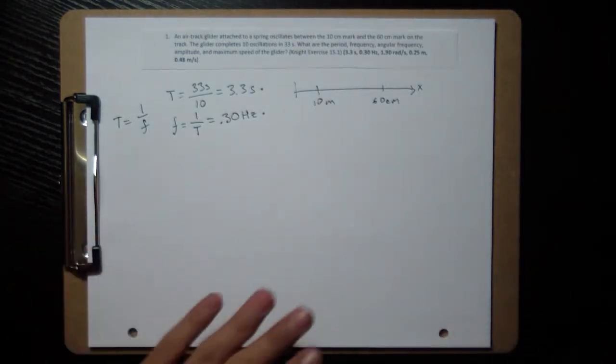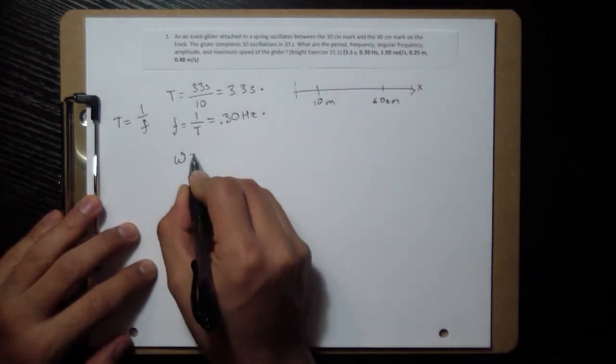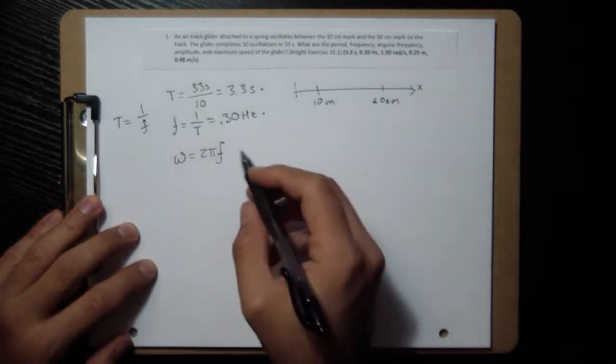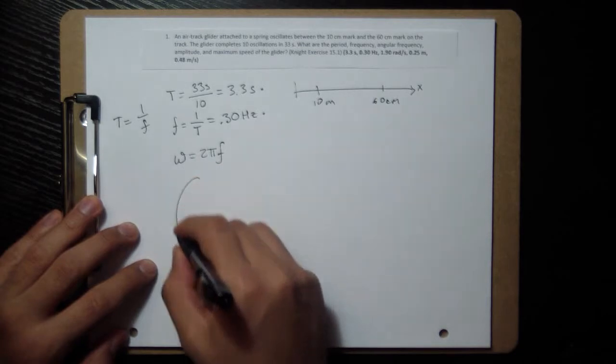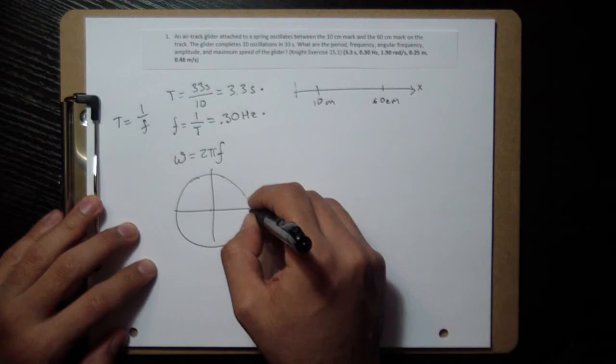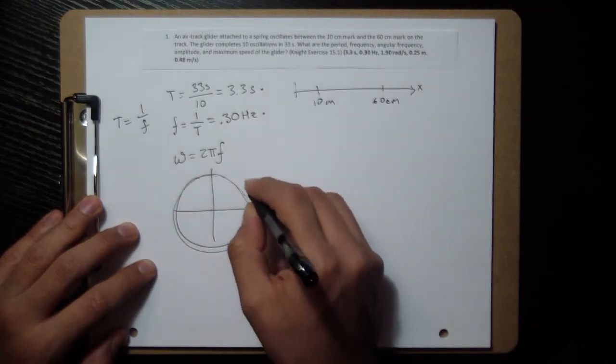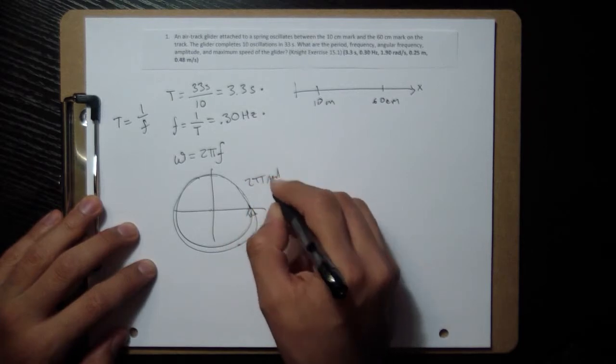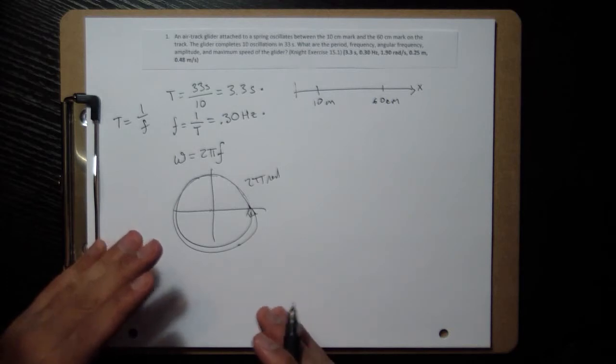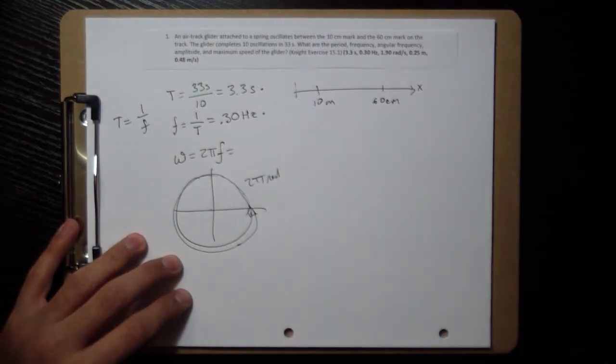Next, we want to know what the angular frequency is. And the relationship between the regular frequency and the angular frequency is that the angular frequency, which we usually write with an omega, is 2 pi times the normal frequency. The reason is that a lot of times you're thinking about this as going around in a circle. And when you complete one cycle, one circle, then you go around 2 pi radians. So angular frequency is really measuring how many radians per second versus the regular frequency, which is just how many cycles per second.